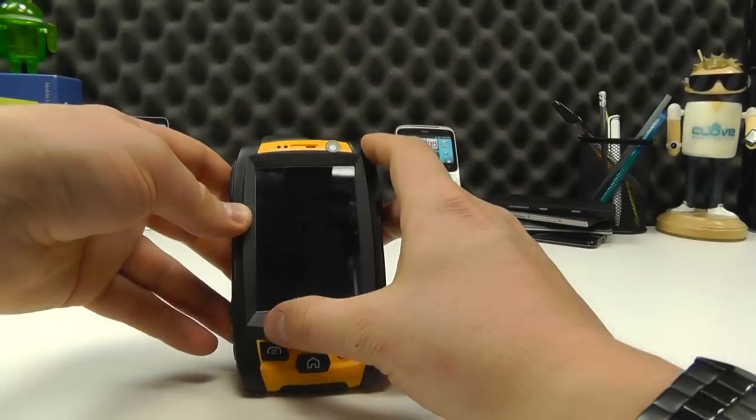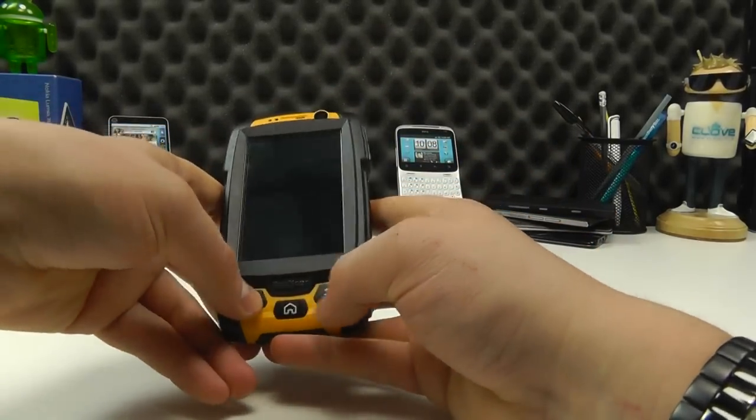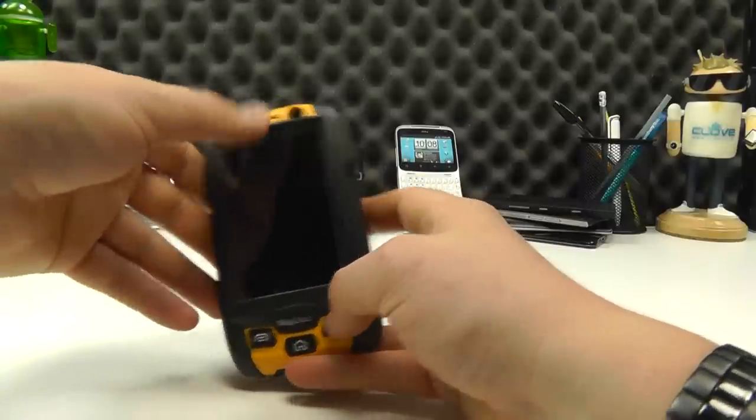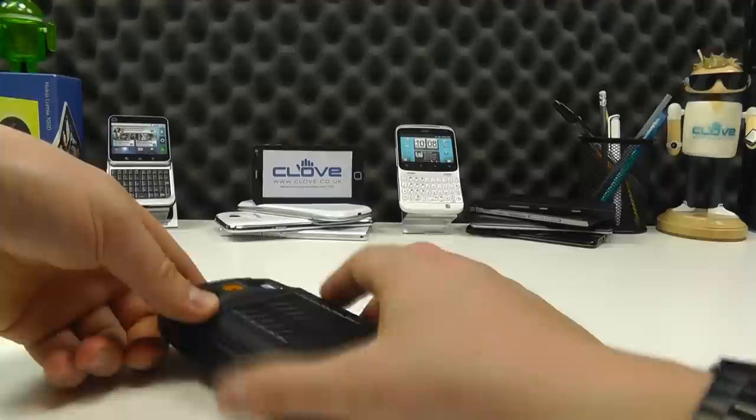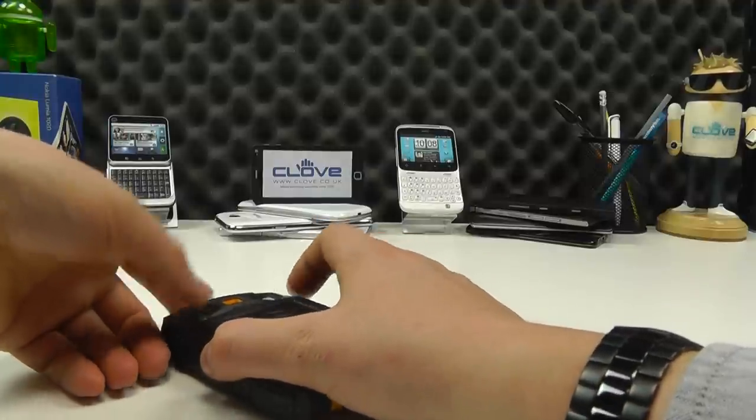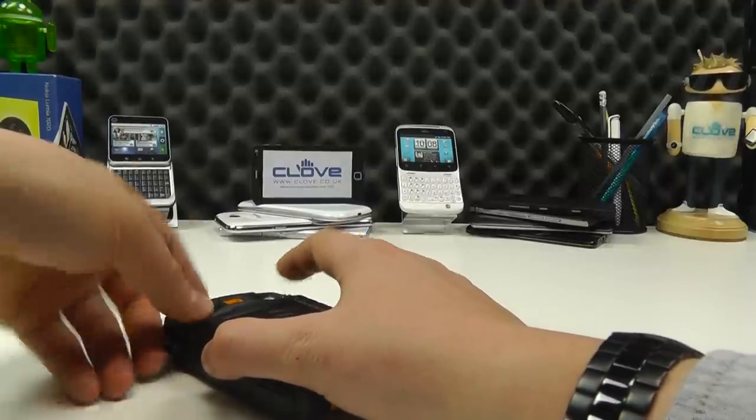On the front, the touch screen display, physical buttons for home, menu, and back, front facing camera, notification lights and earpiece. Let's pop the battery in so you can see it powered on.